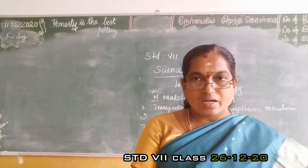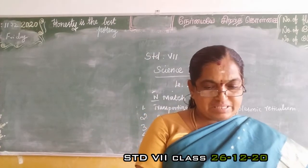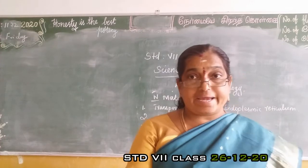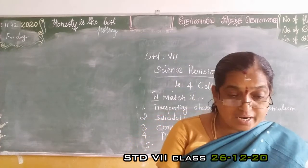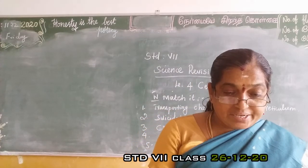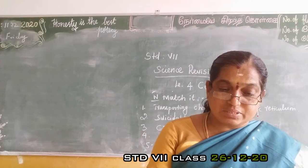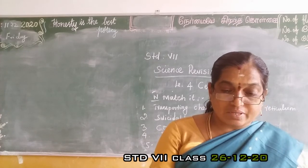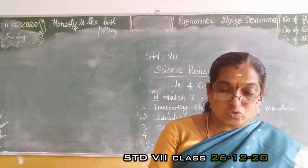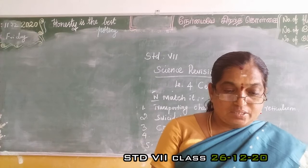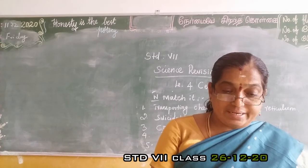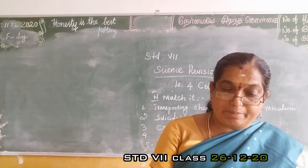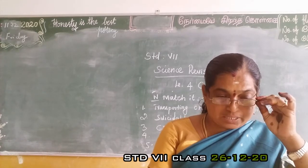Fifth division — analogy. First: bacteria are micro-organisms. Mango tree is a macroscopic organism.